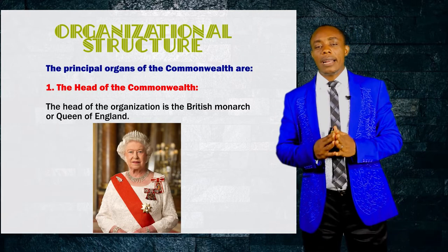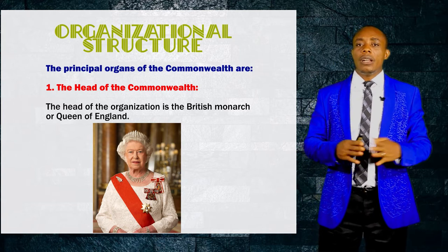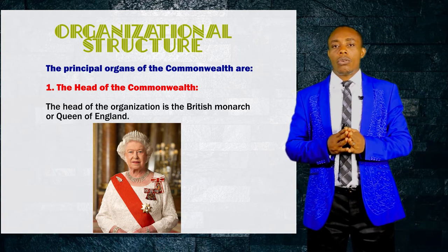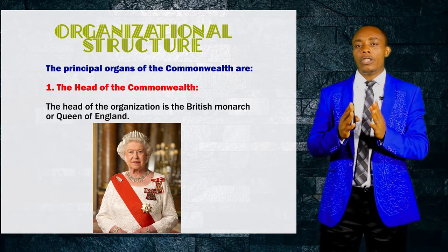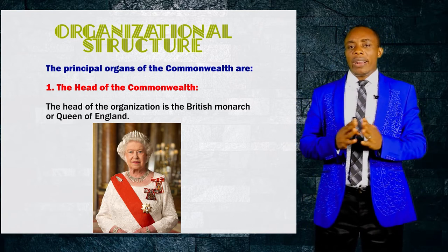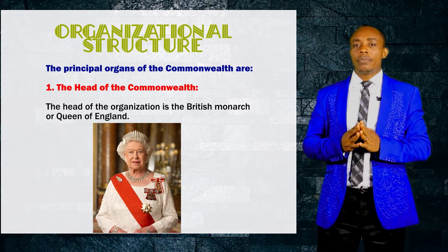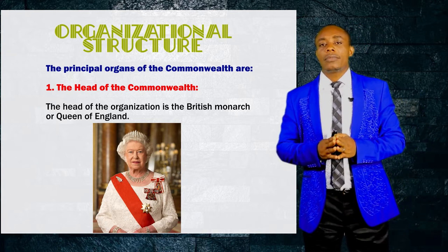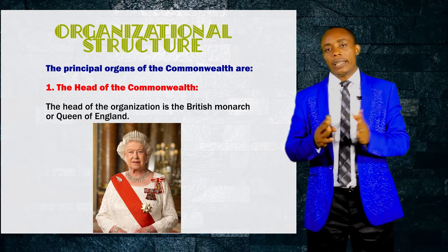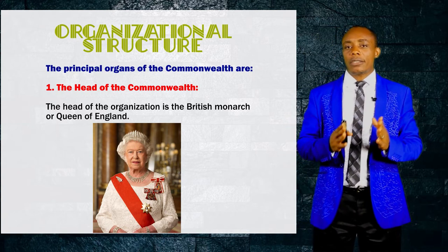Having considered the aims and objectives of the organization, now let's look at the organizational structure, or what is known as the organs of the organization. The Commonwealth has three principal organs: the head of the Commonwealth, the heads of government, and the secretariat.